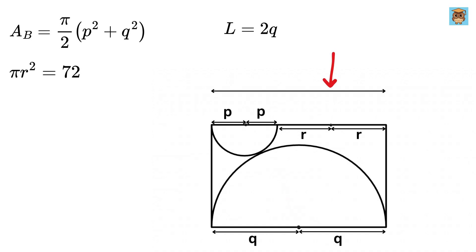But look at this side. This length will also be equal to the diameter of this semicircle, or 2R, plus the diameter of this semicircle, or 2P.